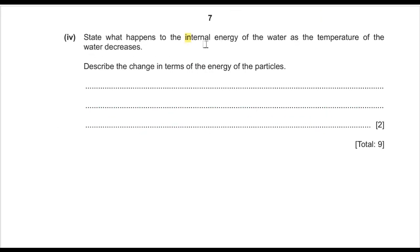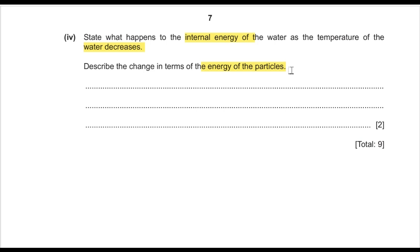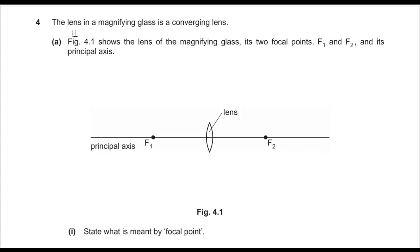Part four asks what happens to the internal energy of water as its temperature decreases, in terms of particle energy. When temperature falls, the kinetic energy of particles is reduced, so the internal energy also decreases.